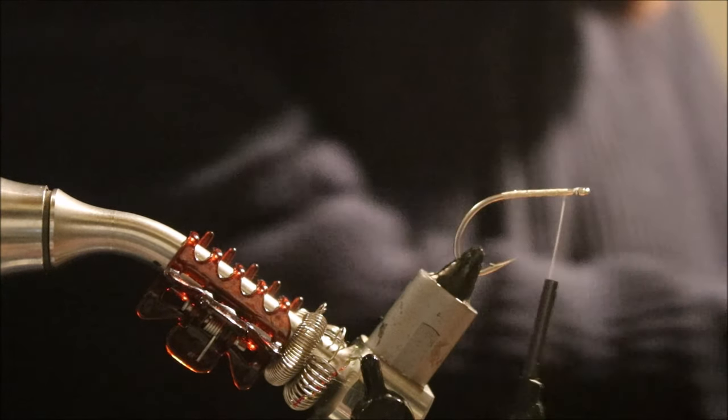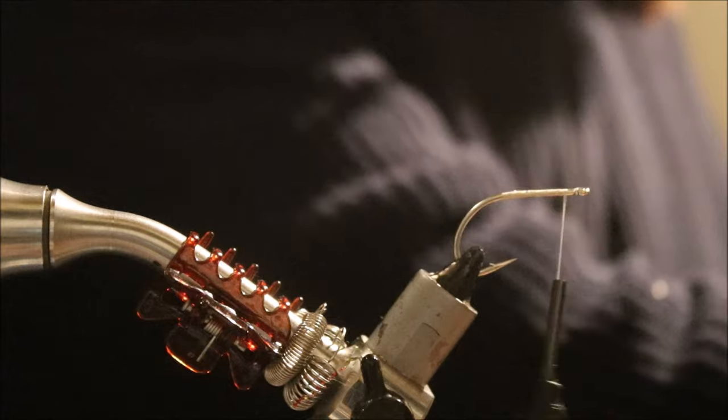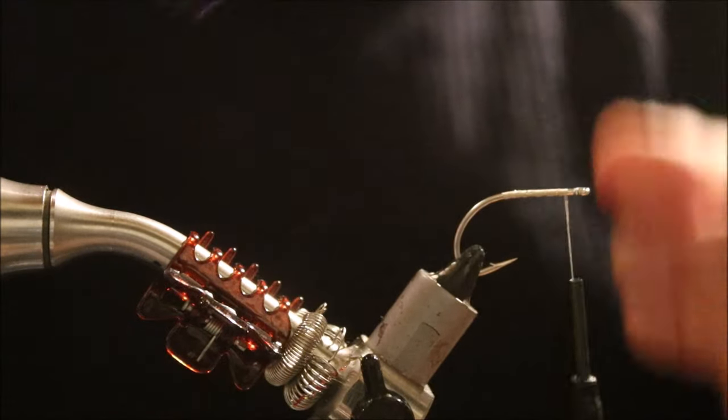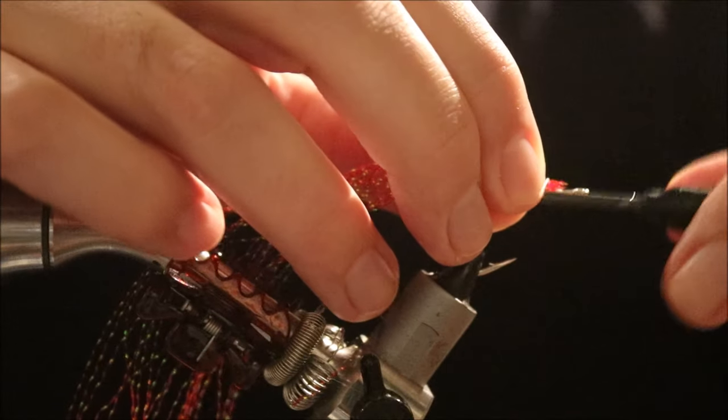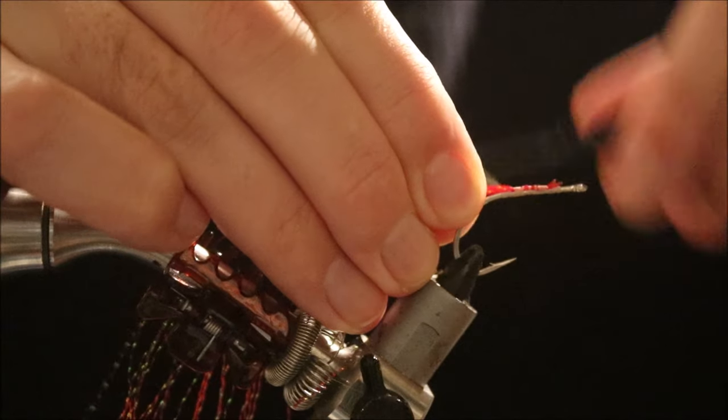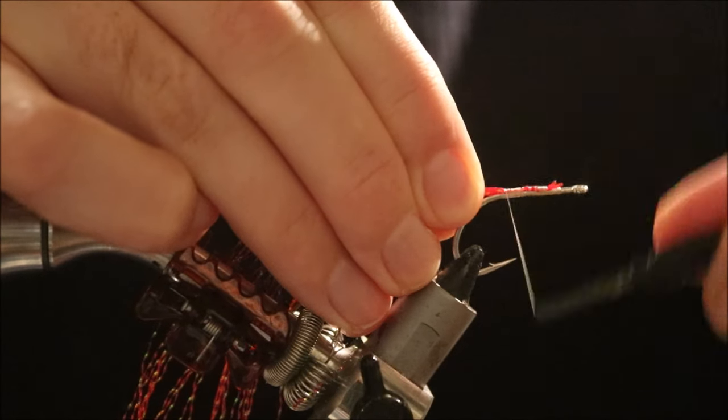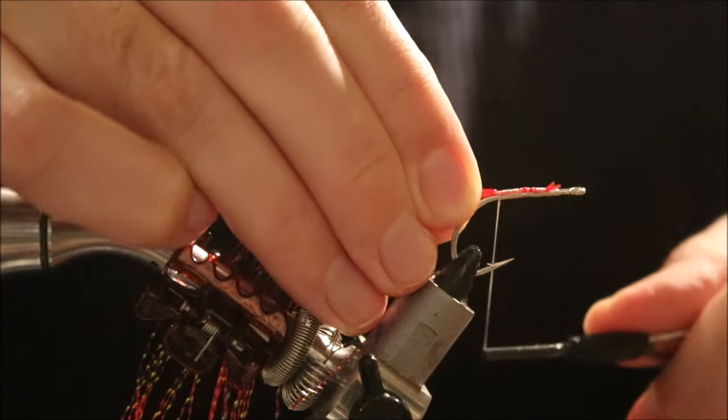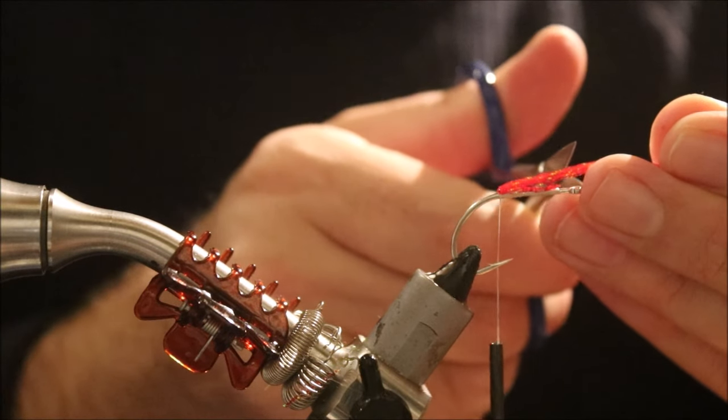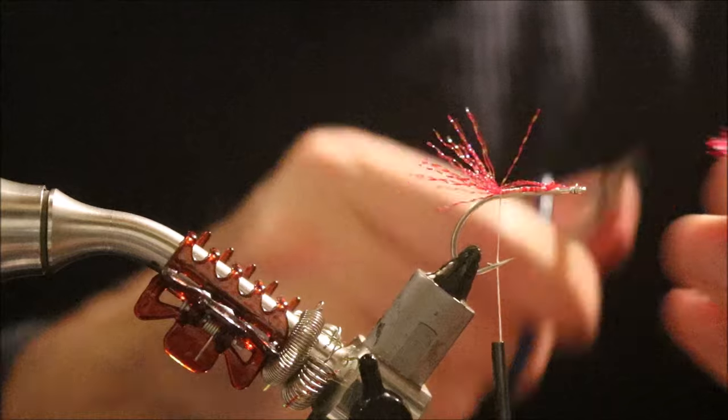For the throat, I've got some Crystal Flash. I have about 15 to 20 strands, just red, plain red Crystal Flash. Tie it in, keep it on top of the shank, come right back to the bend, and then I'll cut it by shank length.